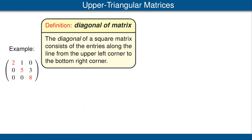The diagonal of a square matrix consists of the entries along the line from the upper left corner to the bottom right corner. Let's look at an example. Consider the 3-by-3 matrix shown here. The diagonal entries are shown in red. Thus, the diagonal entries are 2, 5, and 8.